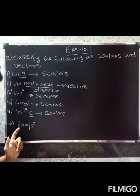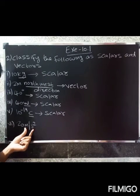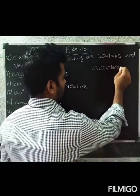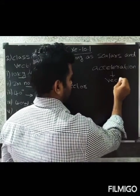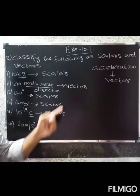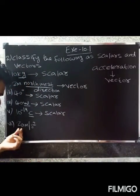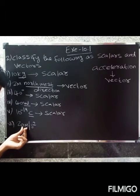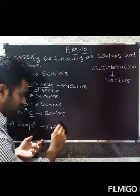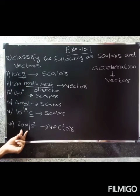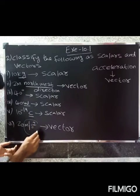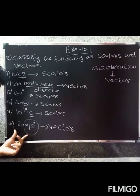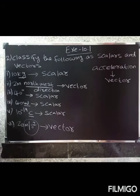Next is 20 m per second squared. This is acceleration. Acceleration is a vector quantity because it includes both magnitude and direction. So 20 m per second squared — magnitude plus direction — that is a vector. Thank you.